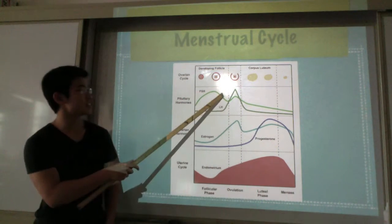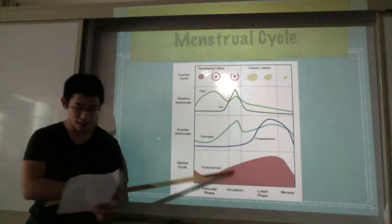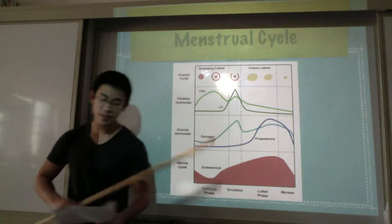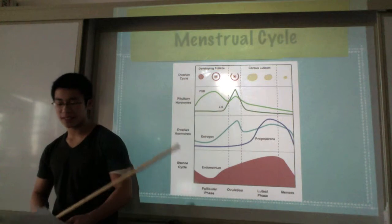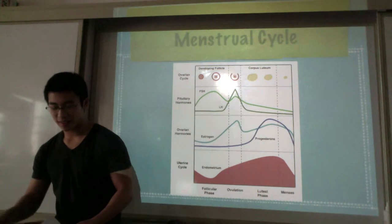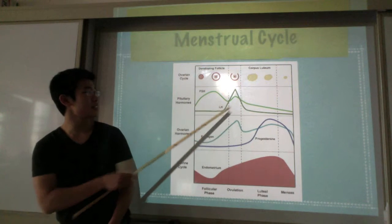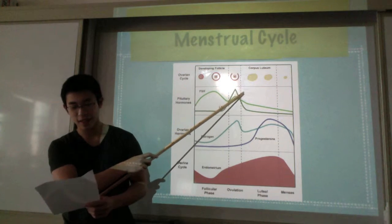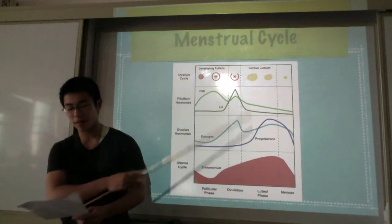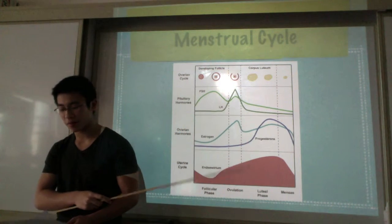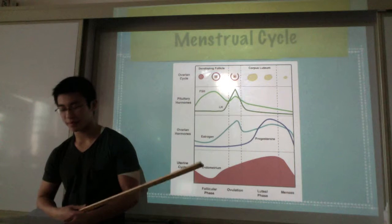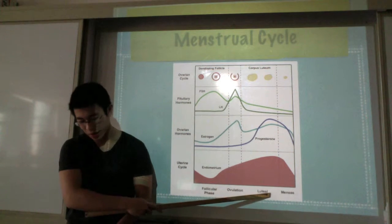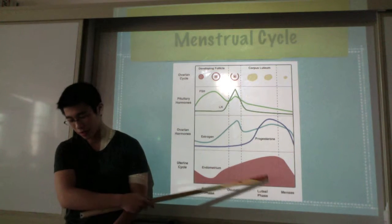And then the next stage is ovulation. Ovulation is when a surge in LH causes ovulation, which is also called the egg release. And the rupturing of the follicle creates a corpus luteum.